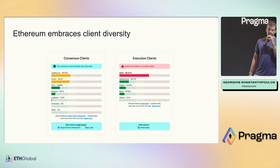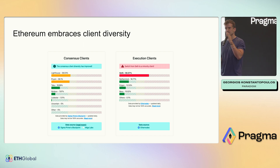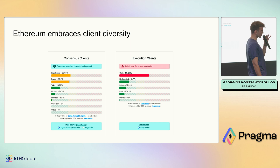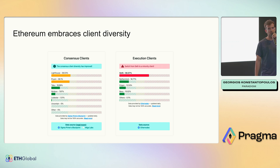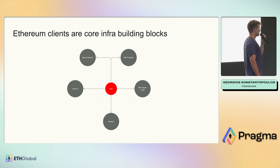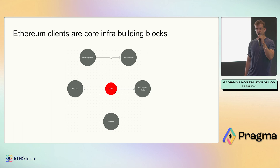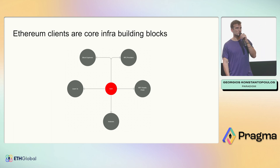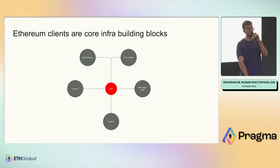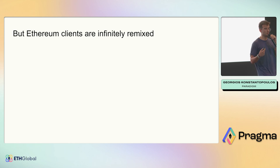Ethereum also requires client diversity. It requires a healthy set of participants in both the consensus and execution layer such that if a critical issue happens, the network does not finalize a conflicting checkpoint. If it happened it would be catastrophic. An Ethereum client is a piece of software that you would expect to run as a node, but it's also used in various other applications — examples include indexers, block explorers, layer 2s, MEV infrastructure and so much more.